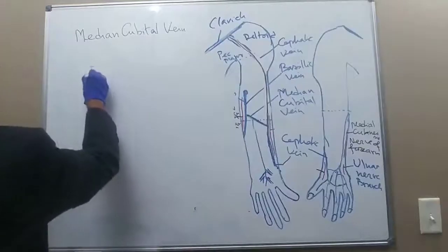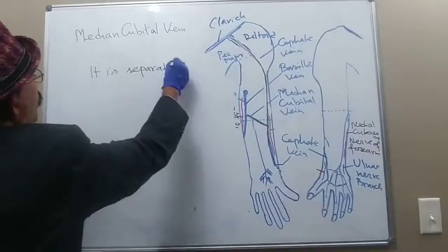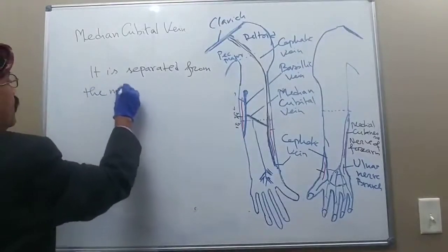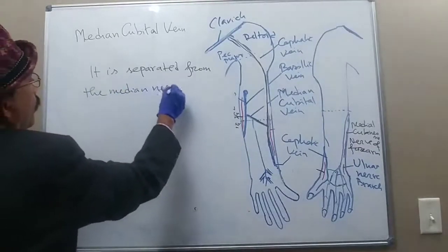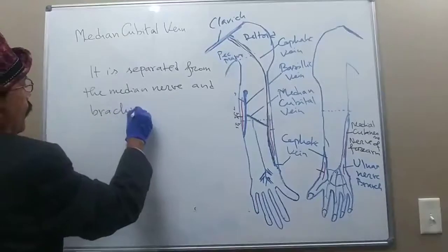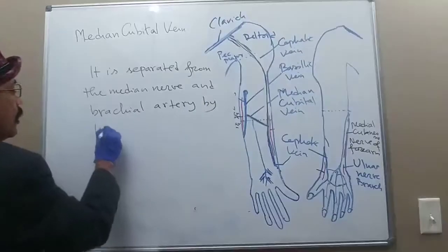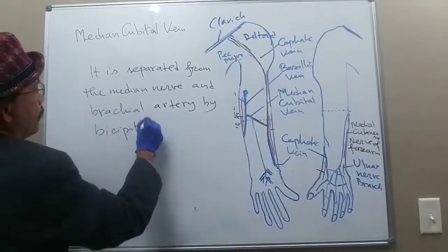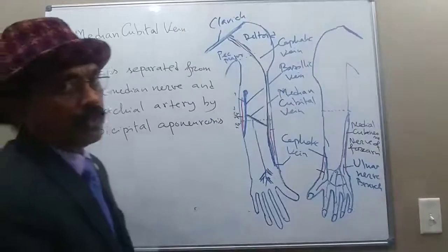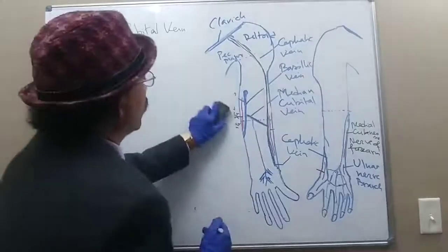The median cubital vein is separated from the median nerve and the brachial artery by the bicipital aponeurosis.